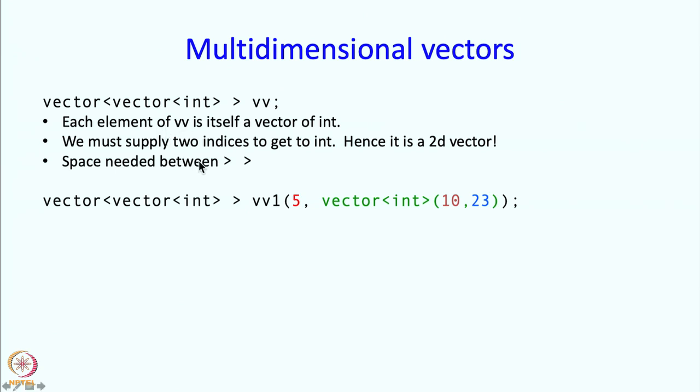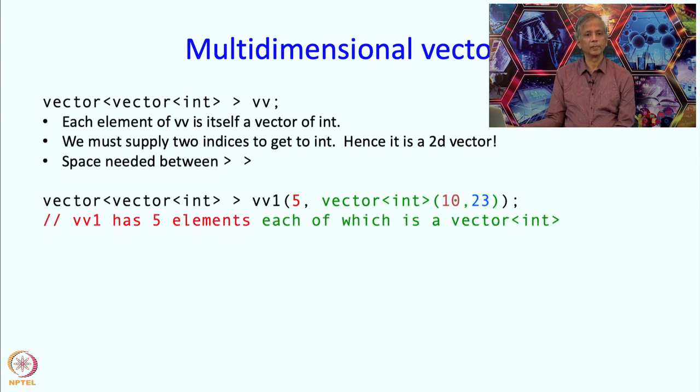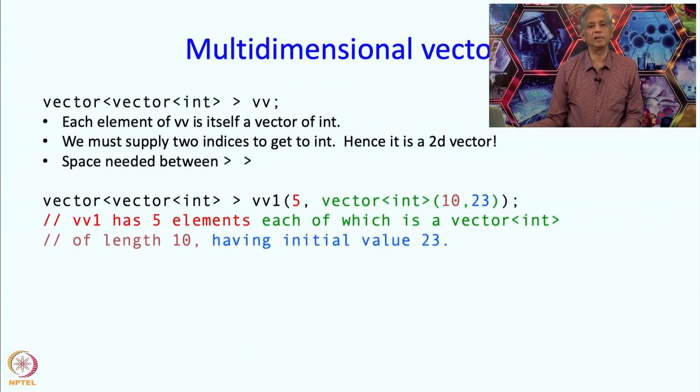Here for example, is a definition of something which looks complicated, but which can be easily understood. I have a vector of vectors of integers called V1. This 5 tells me how many elements this vector has. Whatever follows is supposed to tell me the initial value of this element. But this element itself is a vector of ints. So the initial value of that vector of ints is going to be a vector of size 10 and each element having a value 23. So VV1 has 5 elements, each of which is a vector of ints and each has length 10 having initial value 23. We are going to get a 5 by 10 array, all elements 23. Quite cool, right?